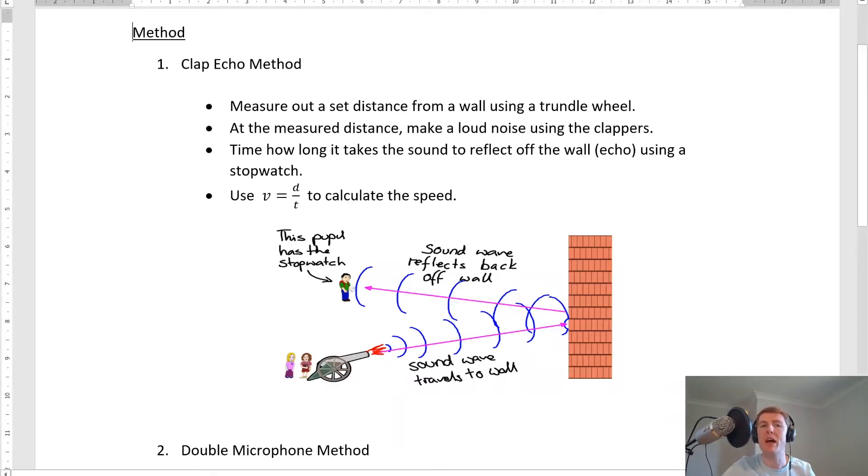The first method is called the clap echo method, and it kind of does what it says on the tin. So it's going to involve some kind of clap and then an echo. You would measure out a set distance from a wall using a trundle wheel, and at the measured distance make a loud noise using the clappers. In this example, you've got a cannon, but obviously you wouldn't have a cannon in school. What you could use is clappers or an air horn, or you could actually just clap your hands together.